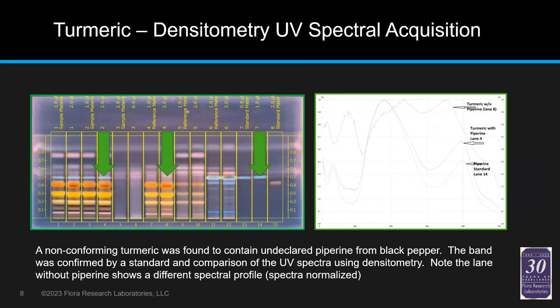Another example: if you have an anomalous band in a turmeric sample, a lot of seasoned folks will suspect piperine, which is commonly added to turmeric. In this case it was undeclared. Looking at the spectral data, lane 4's band is spectrally almost identical to piperine. And lane 8 — a turmeric sample without that band at the same location — doesn't show that spectra. This demonstrates using the densitometer to sit on a band and collect its UV-Vis spectral profile, giving us another dimension of information.